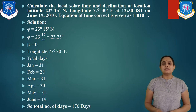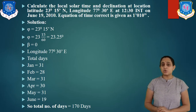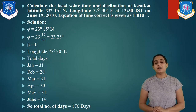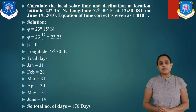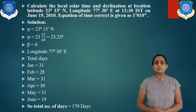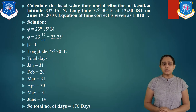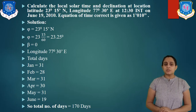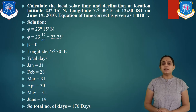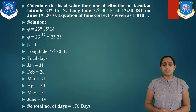For solving it, let us check the given data. First is location latitude, which is the phi angle, that is 23 degree 15 minutes north. Let us convert 15 minutes into degrees: 15 by 60, which gives 23.25 degrees.